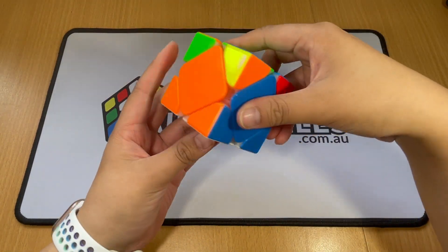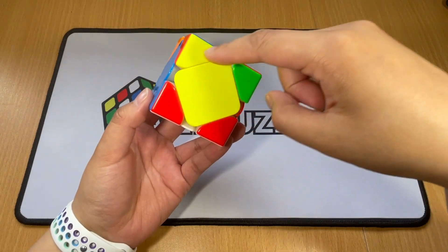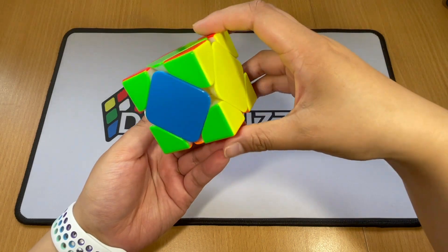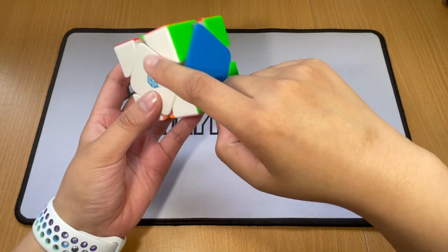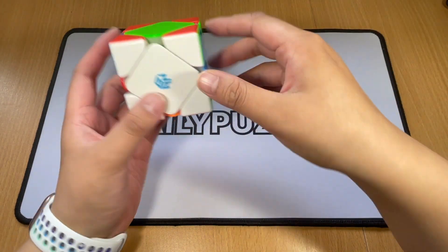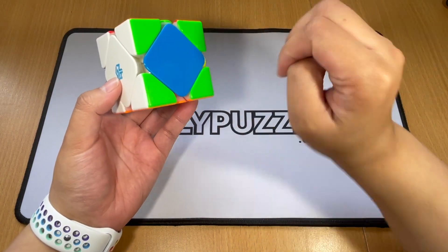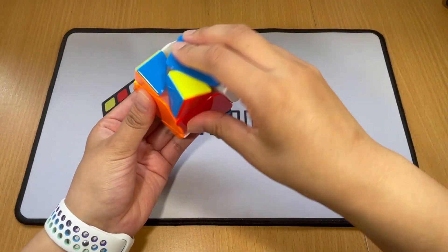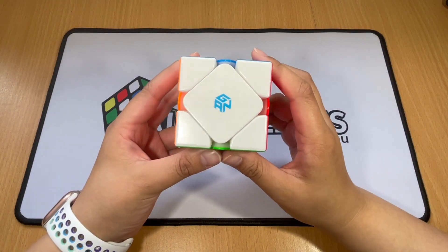From here, turn it to the side where you see this, which is a 180. Solve the sides with a U turn. Look for the side where the opposite colors match. Turn it 180 again and you're done. That's why I really like Skewb.